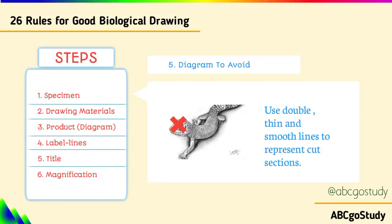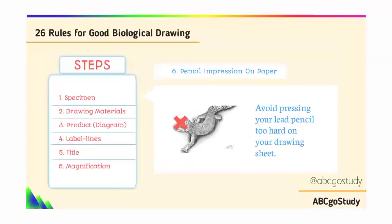Number five, product to avoid: use double thin and smooth lines to represent coarse sections. If a specimen has numerous structures like ears, bristles, or filaments, represent only a few of them — say about ten — so as to finish your work in time and produce a good drawing.